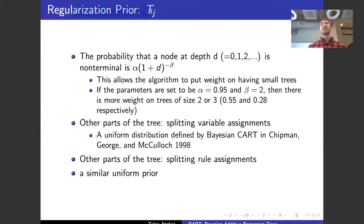The regularization prior for t sub j is a bit more complicated than the others. First, we have to have the probability that a node at depth d equals 0, 1, or 2 branches down the tree is non-terminal, and this is given by previous work in the field as alpha times 1 plus d to the minus beta power. The paper says that if you use alpha equals 0.95 and beta equals 2, then it puts more weight on trees of size 2 or 3, puts 0.55 and 0.28 probability on these respectively, and that's good because we don't want large trees.